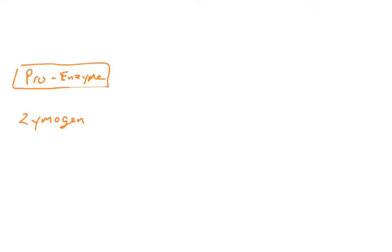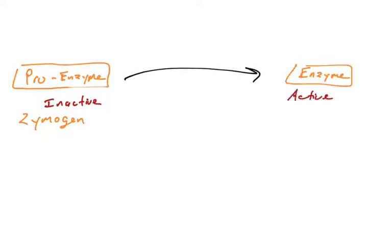Before we talk about what the apoptosome cleaves, we need to cover a topic from biochemistry known as zymogens or proenzymes. Zymogens are proteins — typically enzymes or other precursors — that are made but are not active. A proenzyme has enzyme activity in principle, but it is kept in an inactive state and requires some biochemical modification in order to activate. There are many instances in the body where proenzymes or prohormones are created and must be processed to become fully active.